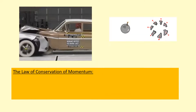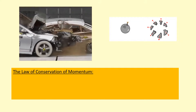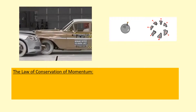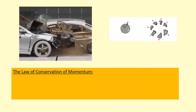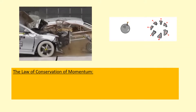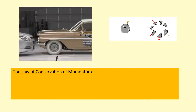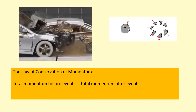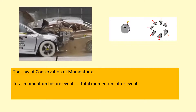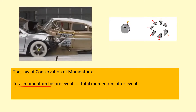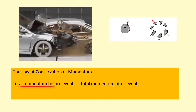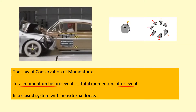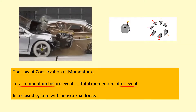Momentum is very useful because it can be used to find the velocities of objects in events like collisions and explosions. The law of conservation of momentum states that the total momentum before an event equals the total momentum after an event. However, this equation can only be used if we're dealing with a closed system with no external forces.